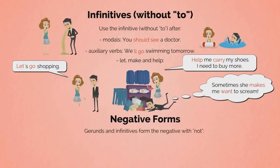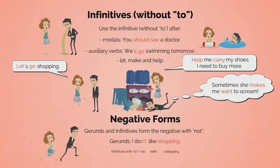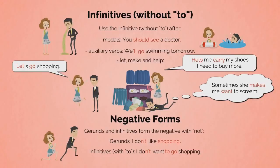Gerunds and infinitives form the negative with 'not.' For example: 'I don't like shopping,' 'I don't want to go shopping,' 'I won't go shopping.'